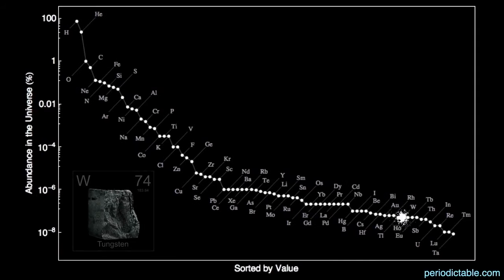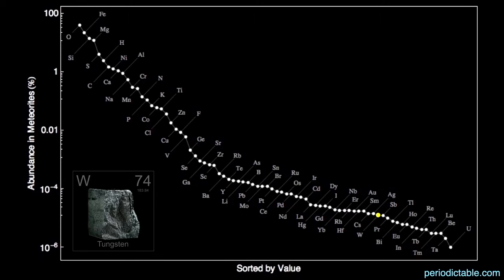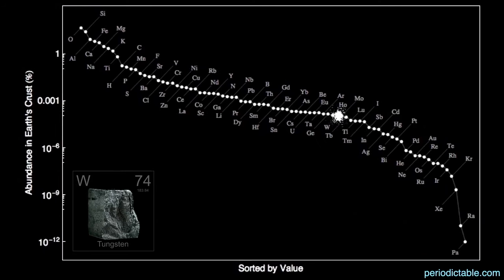The element tungsten is very uncommon in the universe, coming in as the 72nd most abundant element by mass — only 5 parts per 10 billion, right near the bottom of this chart. A little more abundant in the sun, it makes up 4 billionths of its mass and is the 44th most abundant element there. It's the 63rd most abundant element in meteorites at 12 parts per 100 million. Surprisingly common in the crust of the Earth, it's the 59th most common element at 1.1 parts per million — a lot more common than silver at 7.9 parts per 100 million.